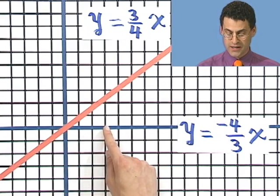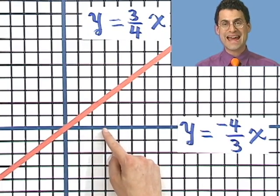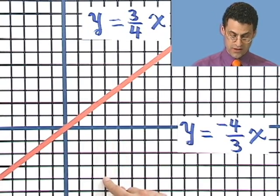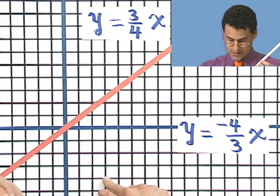Well, -4/3x, but still plus 0, so I still pass through the origin. And the slope is -4 over 3. That means I go 3 units over now in the x direction, 1, 2, 3. But I go 4 units down since I have negative 4. 1, 2, 3, 4.